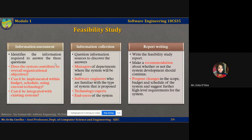The third phase — when all the information is available — is when you start writing the feasibility study report. You should make a recommendation about whether or not the system development should continue. In the report you may also propose changes to scope, budget, and schedule, and suggest further high-level requirements for the system based on your study. This concludes the feasibility study, which is the first step in the requirements engineering process.